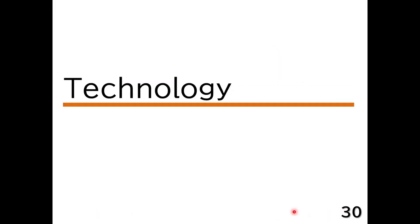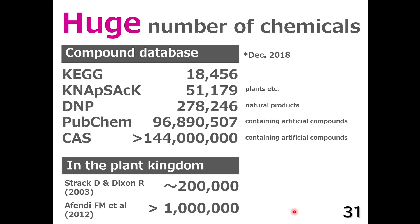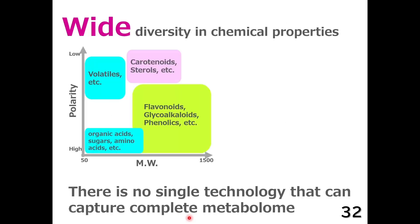Regarding the technological aspect of metabolomics: the number of chemicals is very huge. In the Chemical Abstract Service, more than 144 million chemicals are registered, and it is estimated that more than 1 million compounds are potentially produced in the plant kingdom. Chemicals have wide diversity in their chemical properties such as hydrophobicity, volatility, and so on. So there is no single technology that can capture the complete metabolome.